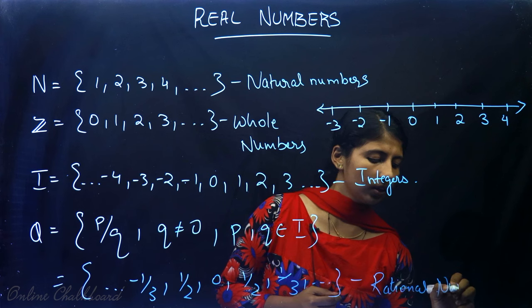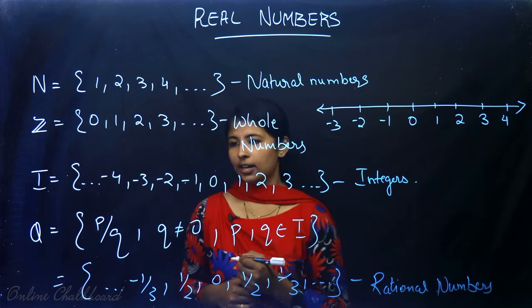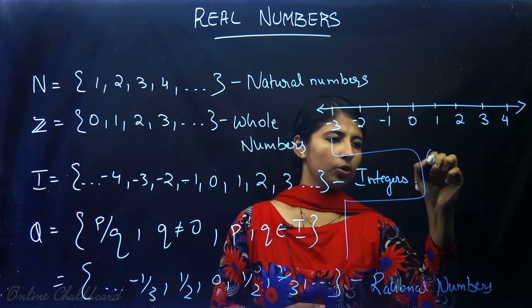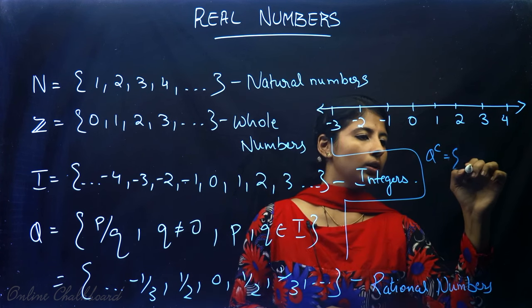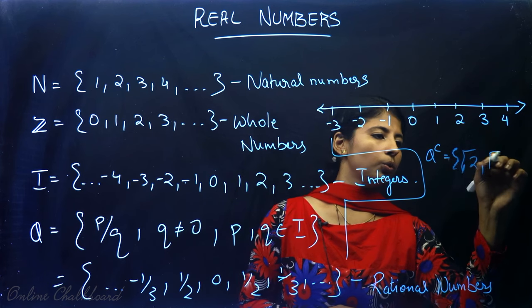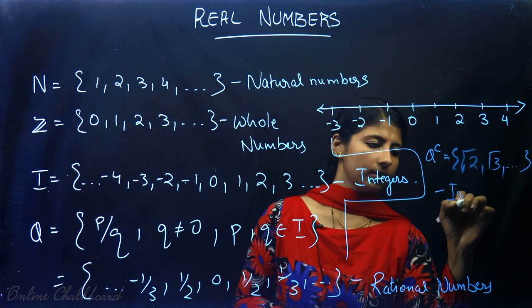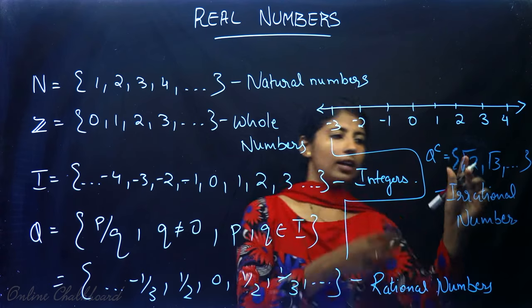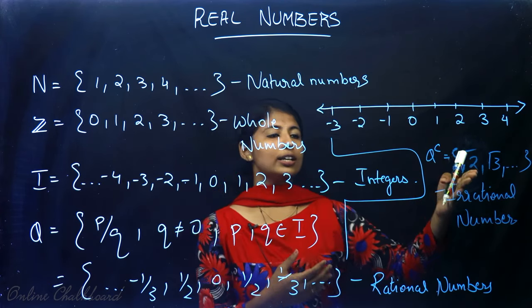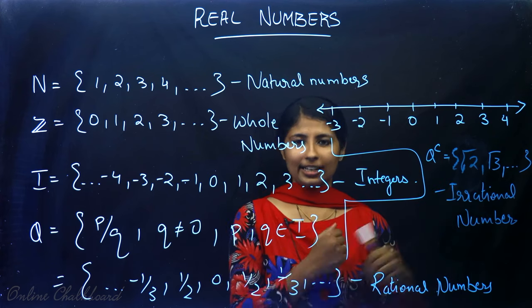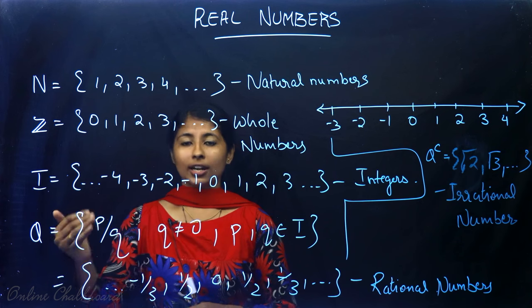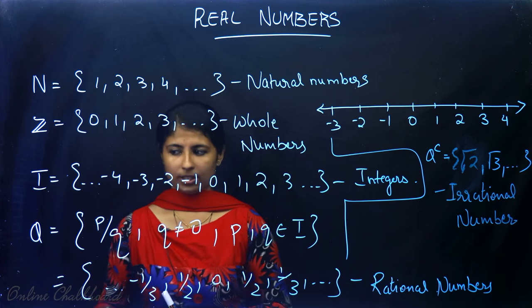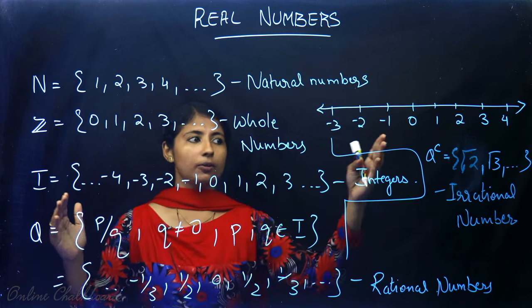And what about the numbers we have not yet mentioned? Those are irrational numbers, which cannot be expressed in the form P/Q. To name a few: √2, √3, etc. Their peculiarity is that they have non-terminating and non-recurring decimal expansion, whereas rational numbers have either a terminating decimal expansion or, if non-terminating, a repeating decimal expansion. This is how we differentiate between a rational and an irrational number.